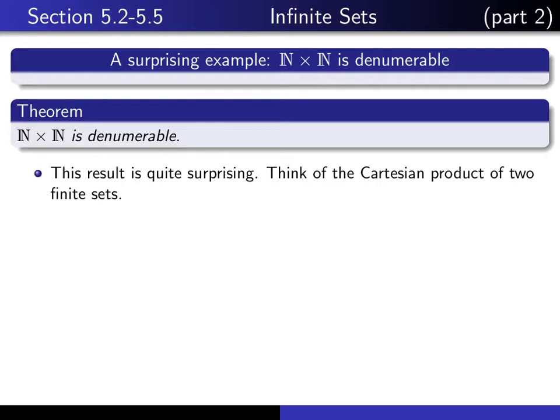Before we go into the proof, I want you to think about why this is a surprising result. It's saying that n cross n has the same cardinality as n, which is another way of saying that from the point of view of cardinality, n cross n is really no bigger than n is. They both have essentially the same number of elements.